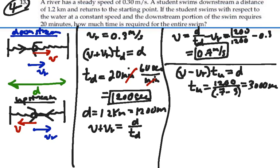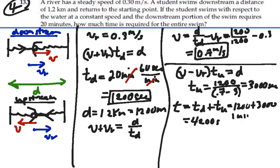So, 3,000 seconds to go upstream, 1,200 seconds to go downstream. Our total time is the time for the downstream plus the time for the upstream. 1,200 plus 3,000 is 4,200 seconds. We're going to multiply that by 1 minute per 60 seconds, and this will be 70 minutes.